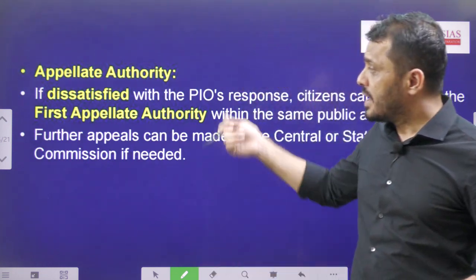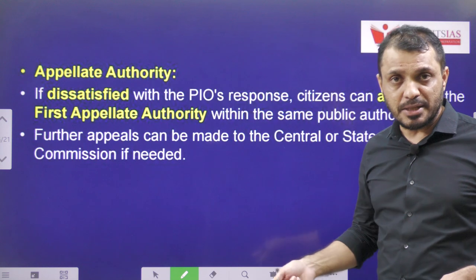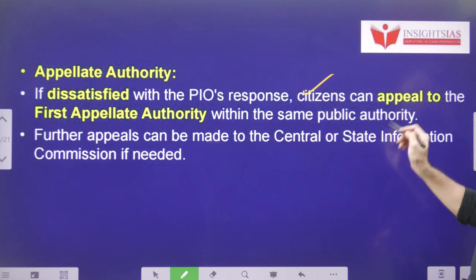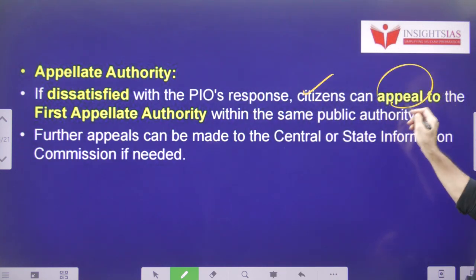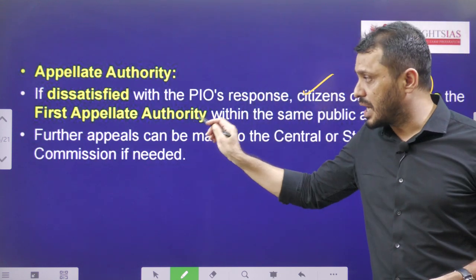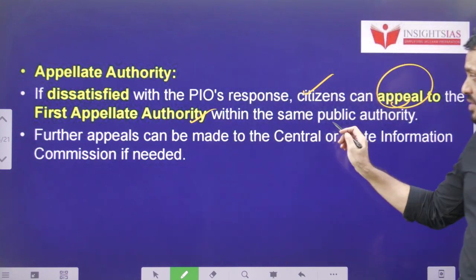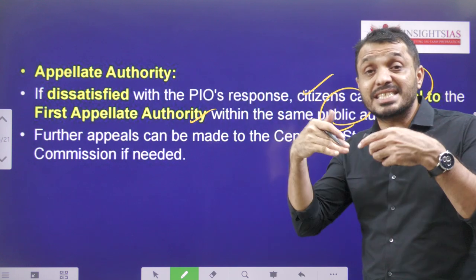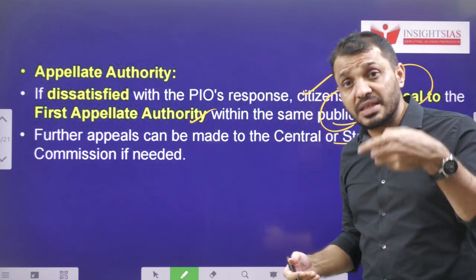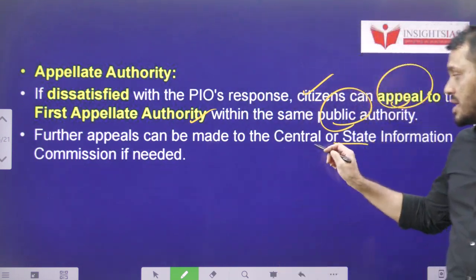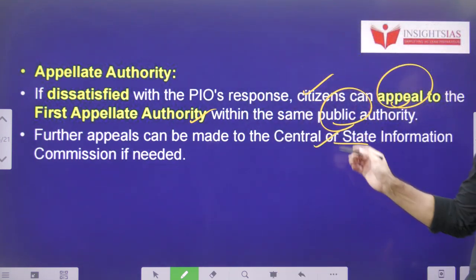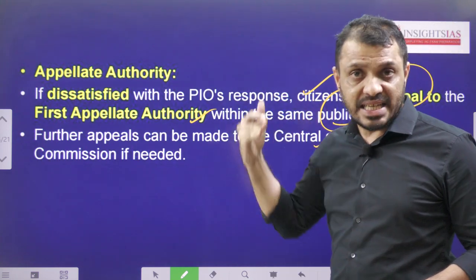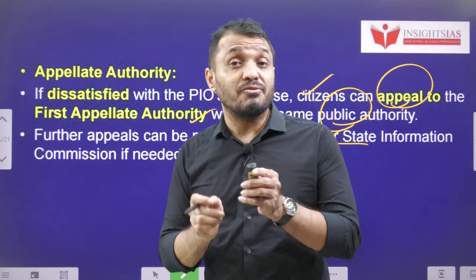In case an individual is not satisfied with the PIO response, they can appeal to the first appellate authority within the same public authority — that means within the same office. Further, they can appeal to the Central as well as the State Information Commission. Those are the next levels of appeal.